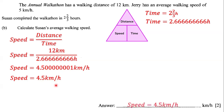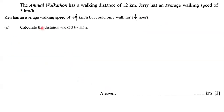So Susan's average walking speed is 4.5 kilometers per hour. Next, the question states that Ken has an average walking speed of 4 and 2 over 3 kilometers per hour, but could only walk for 1 and 1 over 2 hours. Calculate the distance walked by Ken.